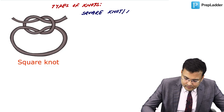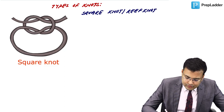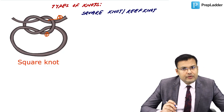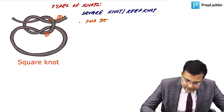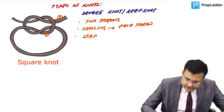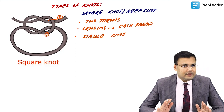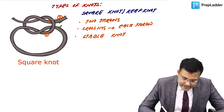In the square knot, two throws are taken with crossing done in each throw — making it relatively stable. Identification: both ends are together (both above or both below). In the surgeon's knot: the first throw has two wraps with crossing, and the second throw has one wrap with crossing.